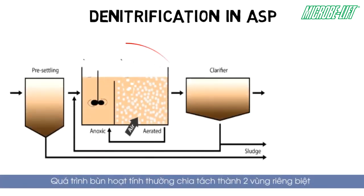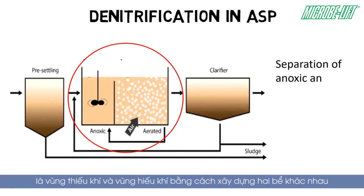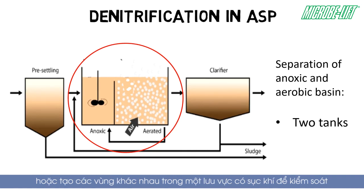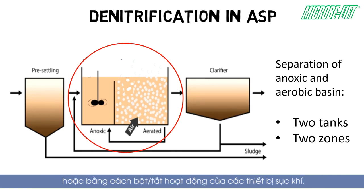The activated sludge process usually separates the anoxic basin from the aerobic basin, either by building two different tanks, by creating different zones within one basin with controlled aeration, or by on-off operation of aerators.